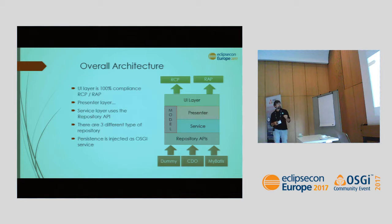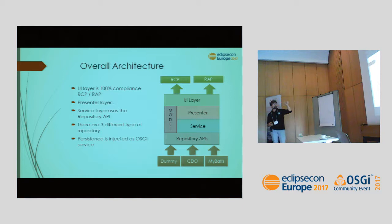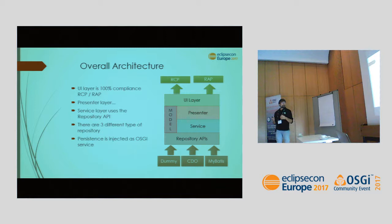Let's look at the overall architecture. We have a model available to all layers. On top is the UI layer, which can run on the desktop with the RCP platform or on the web with the RAP platform — same source code. Then we have the presenter handling UI control logic, the service layer for business logic, a defined repository API layer, and three different repository implementations injectable via OSGI.